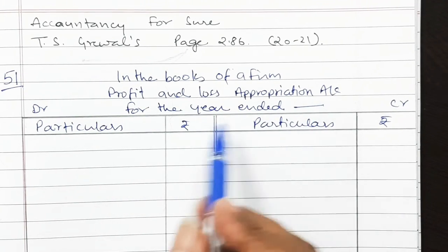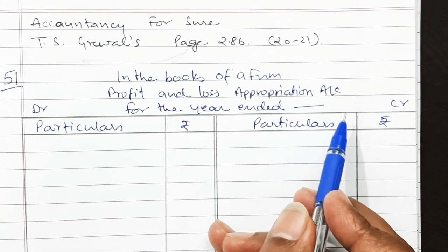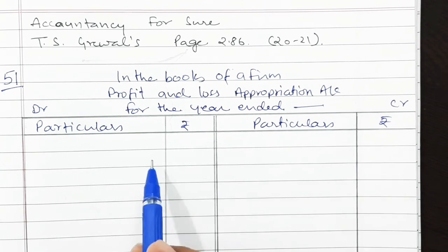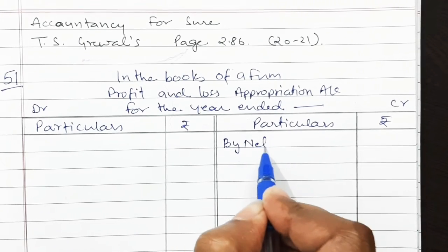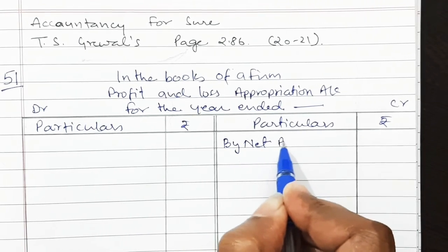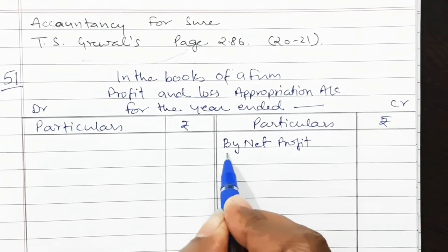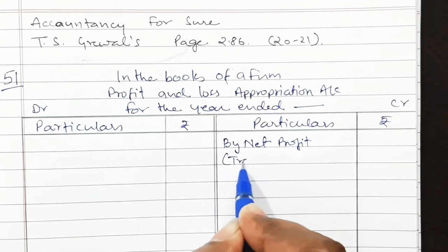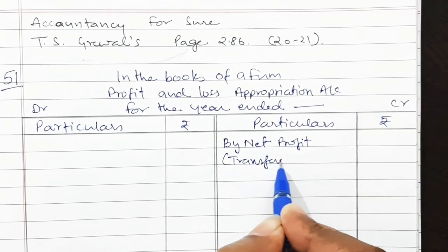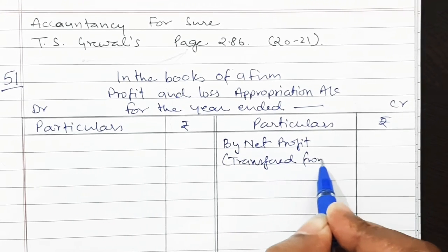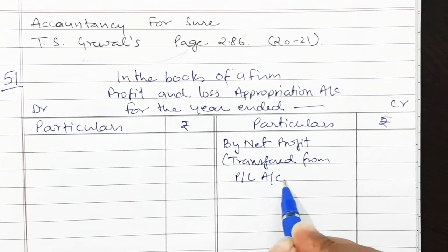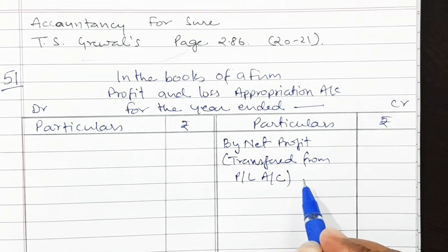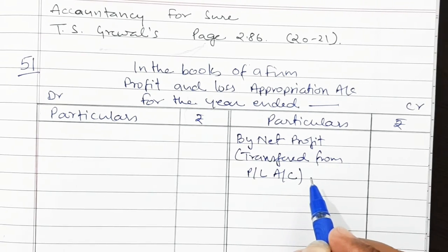For the solution: in the books of the firm, Profit and Loss Appropriation Account for the year ended — date not given in the question. By net profit transferred from Profit and Loss Account, as given in the question it is Rs. 1,72,000.